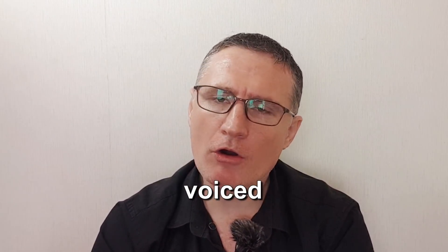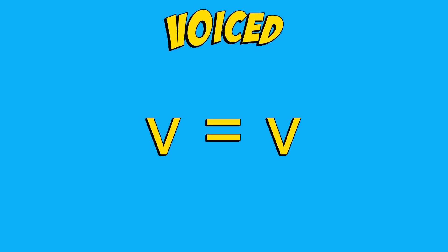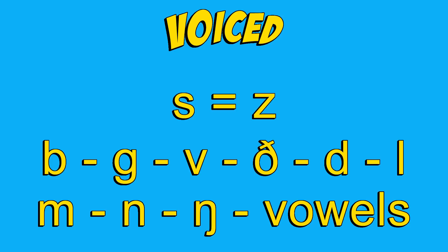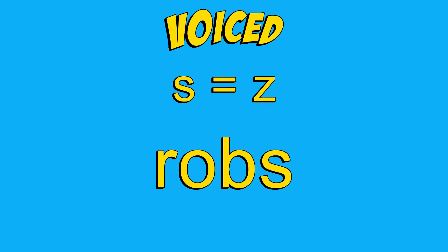But if the sound before the suffix -s is voiced or a vowel sound, then the s is no longer pronounced as an s, it is pronounced as a z. If I take the sounds b, g, v, d, l, n, and all of my vowels, then the s is pronounced as a z.